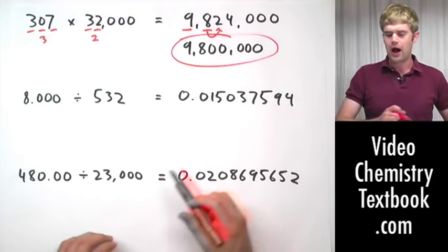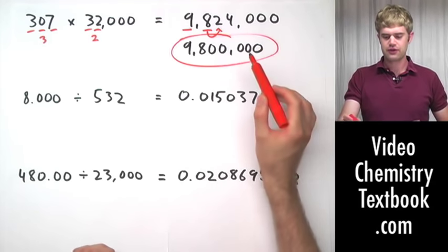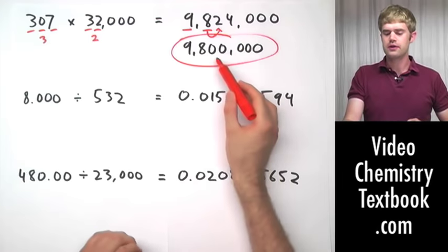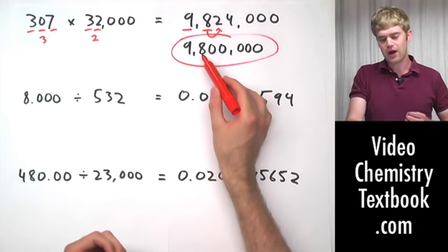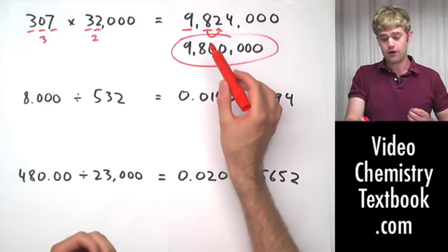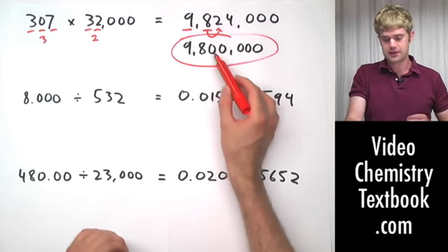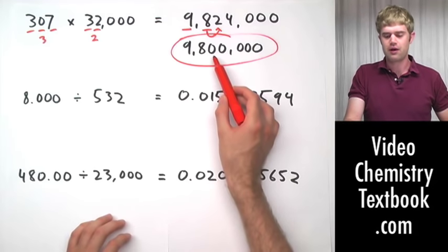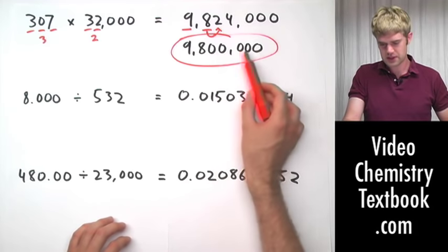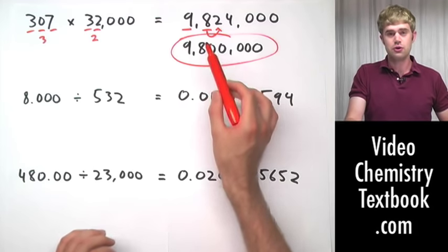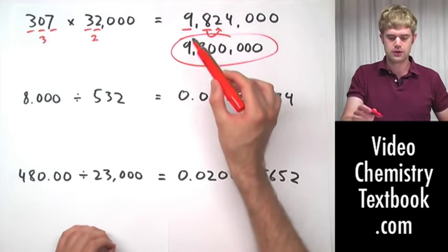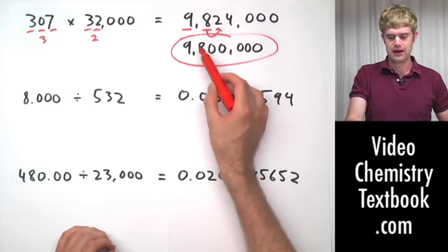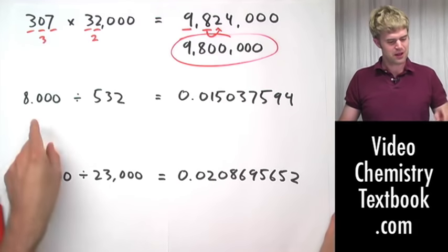Now that you've learned that zeros to the right of non-zero digits are not significant, you understand why filling in the rest of the number with zeros leaves you an answer that has only two significant figures — the nine and the eight and nothing more.